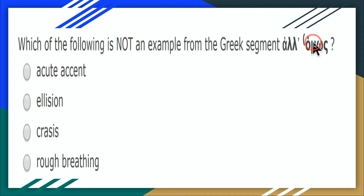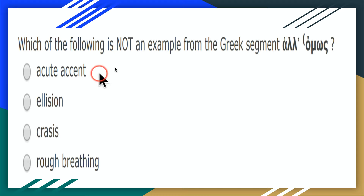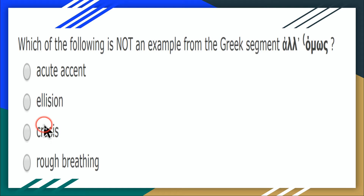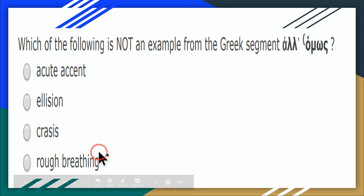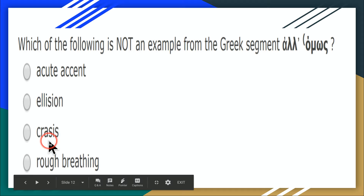Take 'alhomos' — we have an acute, found with 'almost.' We have a rough breathing, which is found. But there is no crasis here because there's not one combined word. What's not found here is a crasis. A crasis is two words becoming one.